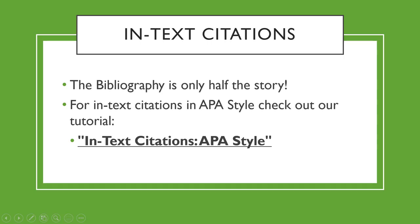That takes care of the bibliographic citation, but the bibliographic citation is only one half of the complete APA citation. Every APA citation has two parts: the bibliographic citation and the in-text citation. The bibliographic citation helps your reader know what article you got the information from, but it doesn't tell the reader what part of your work was taken from that source, nor where in the cited work you got that idea or quote. To learn more about in-text citations, check out our tutorial on in-text citations in APA style.